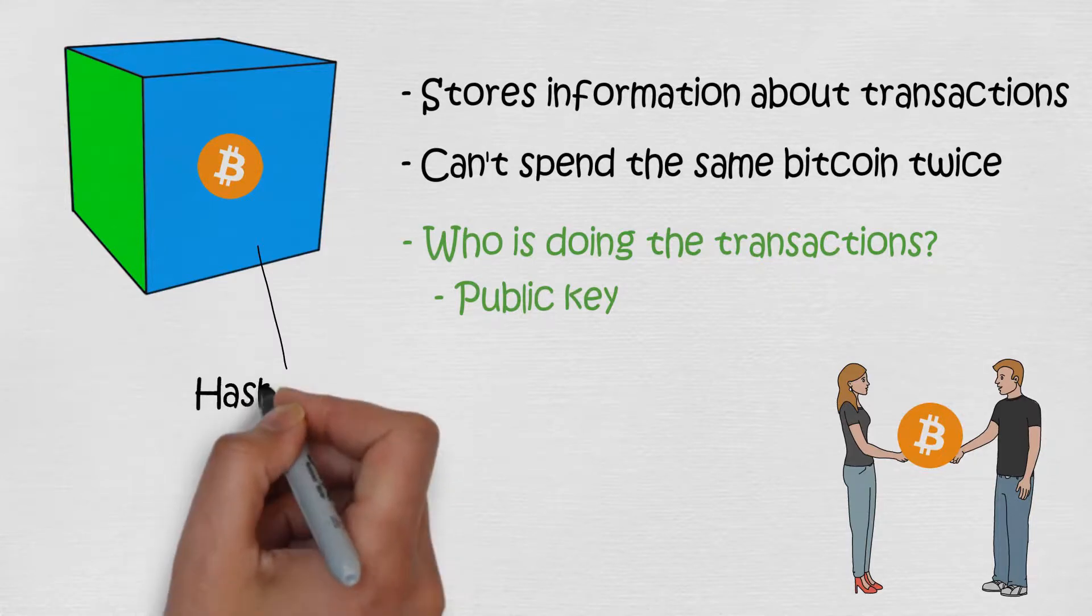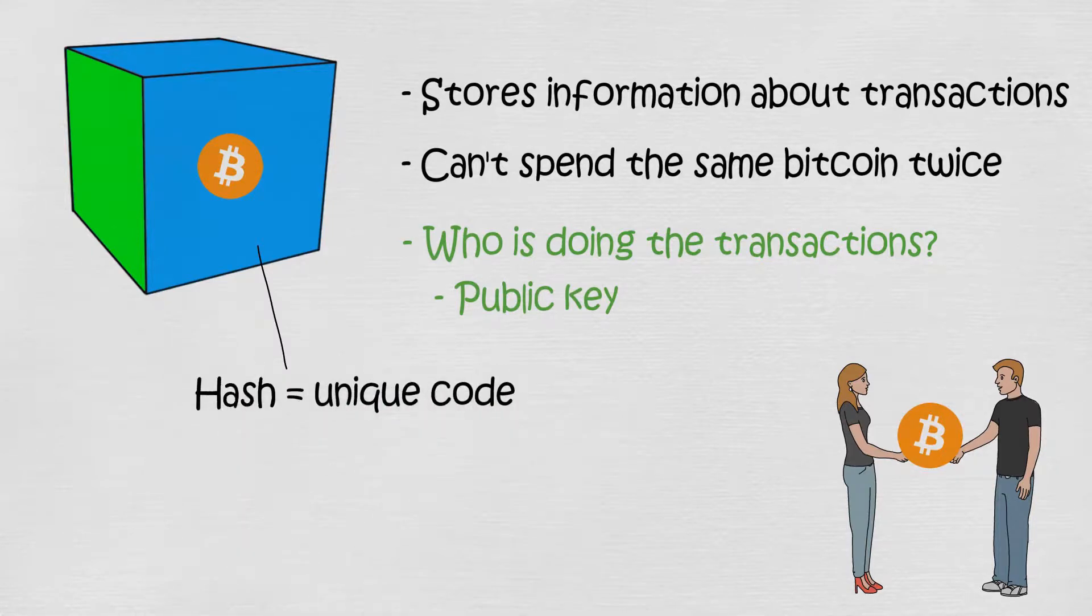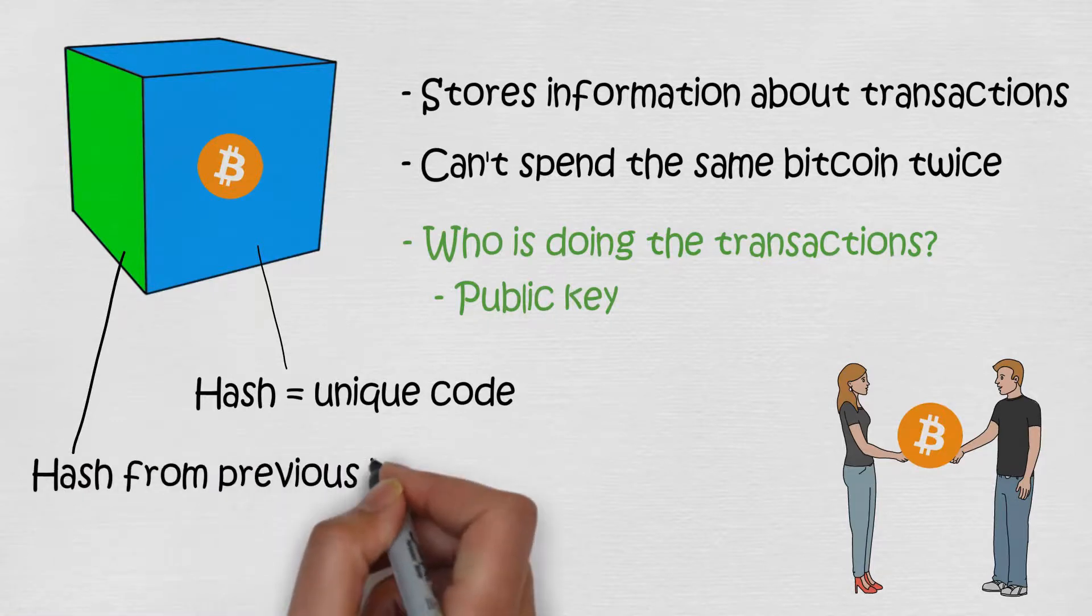Each block also has a hash. A hash is a unique code that separates blocks from each other. Every block also has a hash from the previous block. This way the blocks can be connected.